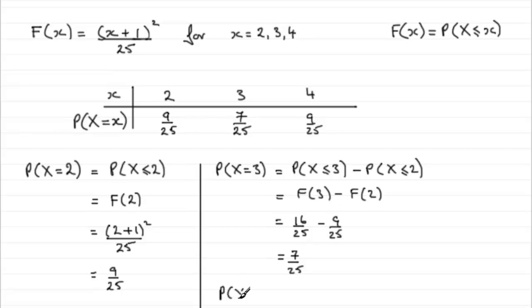The probability that x equals 4 is going to be equal to 1 minus, essentially, f of 3, or these two probabilities added up. So 1 minus 9 25ths plus the 7 25ths. And that gave us 9 25ths.